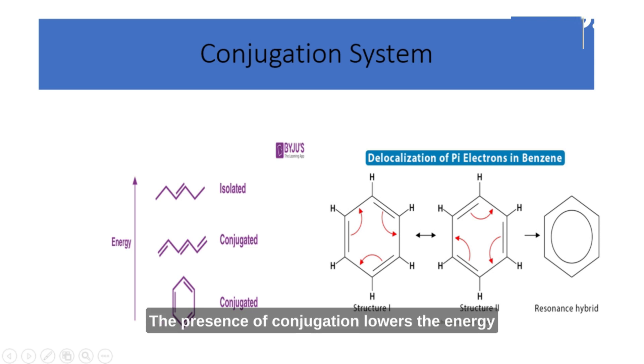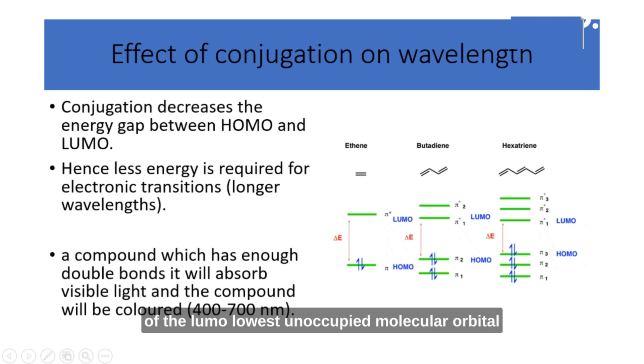The presence of conjugation lowers the energy of the LUMO, lowest unoccupied molecular orbital, making it closer in energy to the HOMO, highest occupied molecular orbital. This reduction in the energy gap between the HOMO and LUMO is what we mean when we say that conjugation decreases the energy gap, making it potentially more reactive or capable of interacting with light in unique ways.